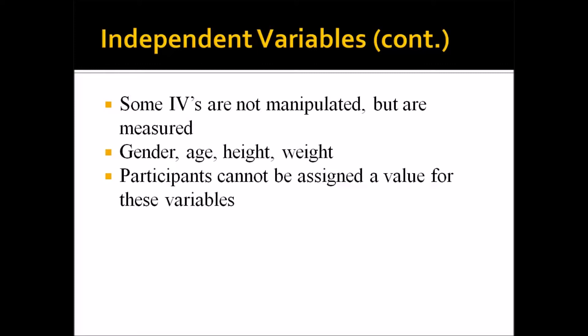Some independent variables are not manipulated, but are measured. Common examples are gender, age, height, and weight, because participants cannot be assigned a value for these variables. So if a participant comes into a study and they're age 45, you can't assign them to be age 60 — they're not 60, they're 45. Similarly, if they're at a given height, say five foot six, you can't assign them a value of five foot. In this instance, these are still considered independent variables, but they're not manipulated — they're measured.